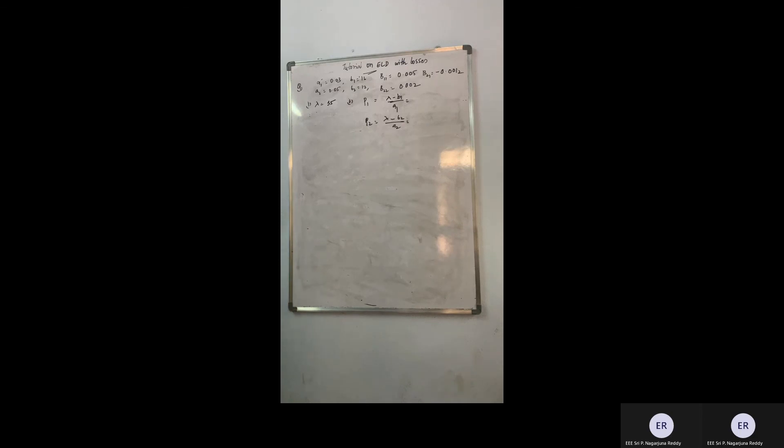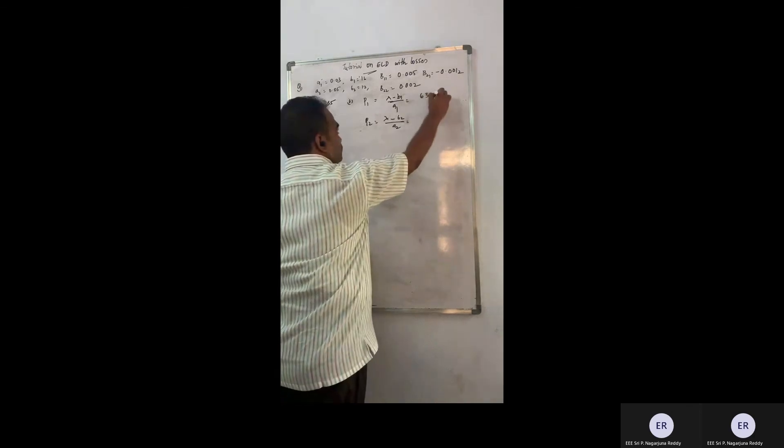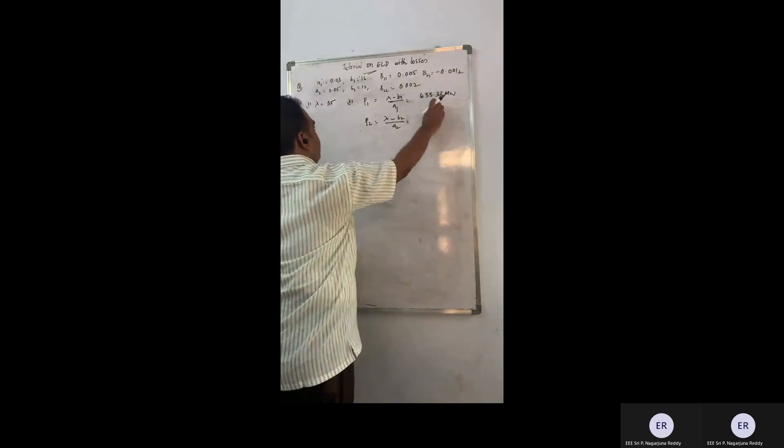So now lambda is 35. So 35 minus 16. So what are the values we will be getting? By 0.03. So the value will be 633.33. This is P1.